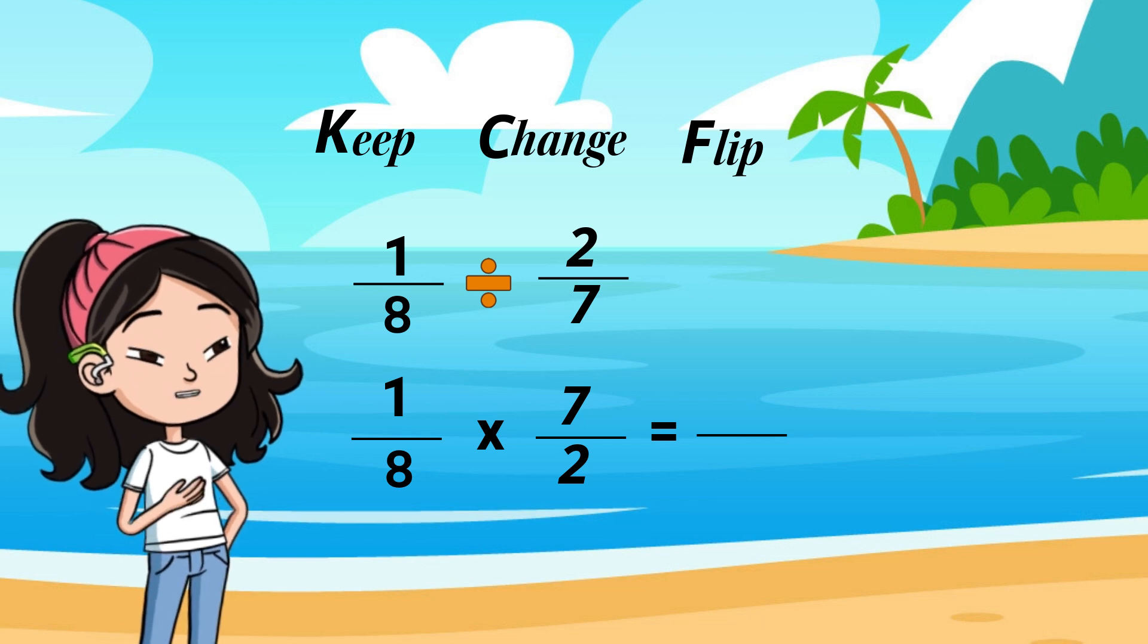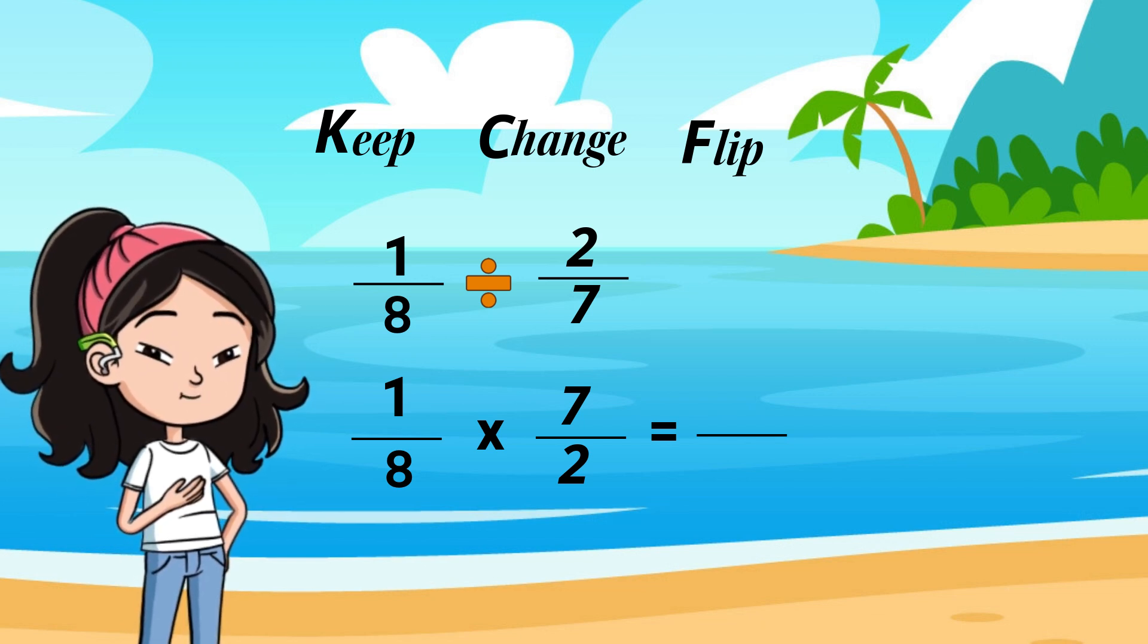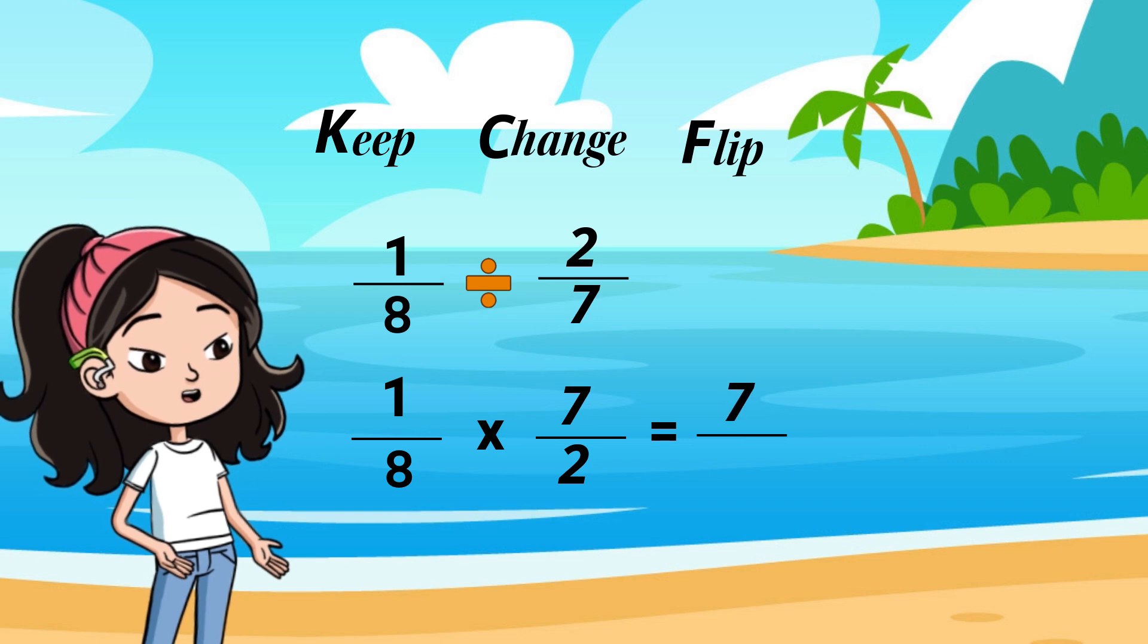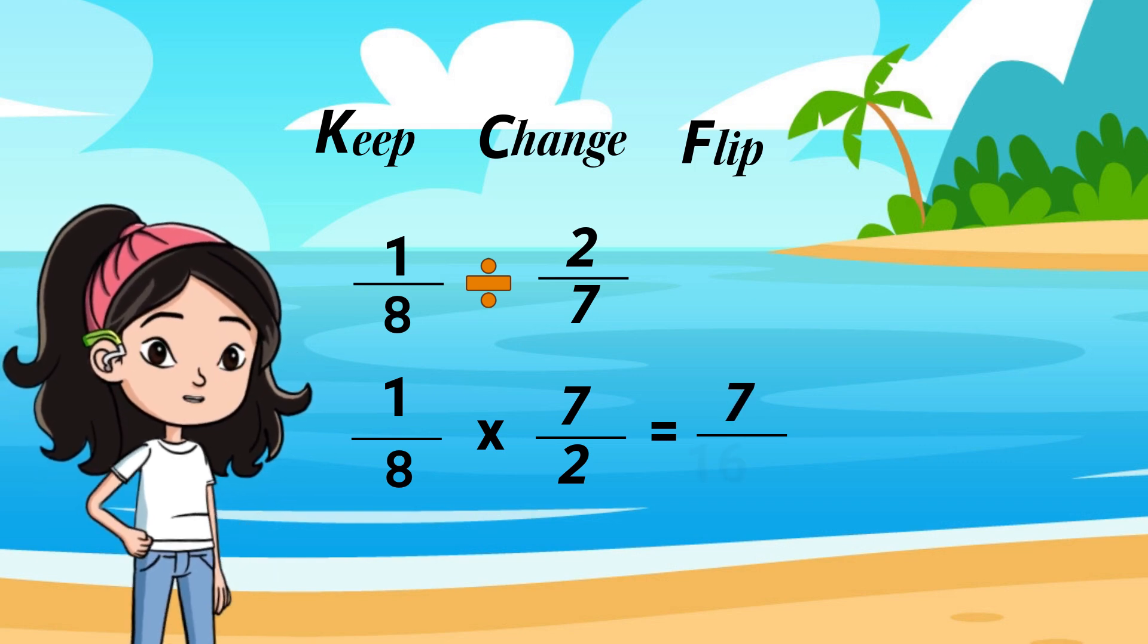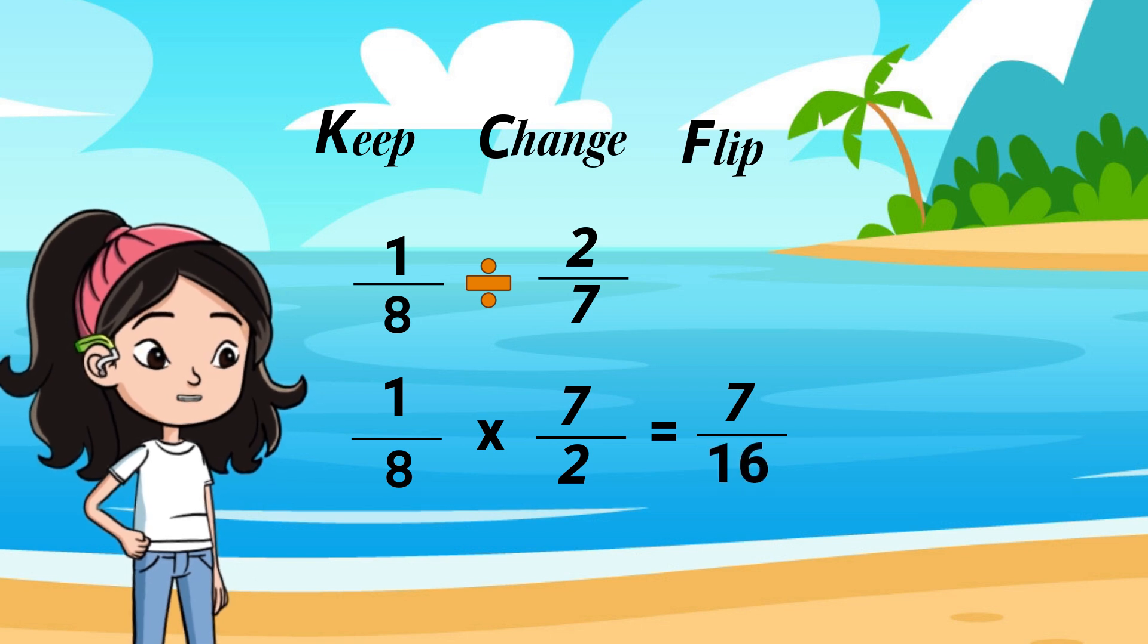Now, multiply across. 1 multiplied by 7 is 7, and 8 multiplied by 2 is 16. Your answer is 7 over 16.